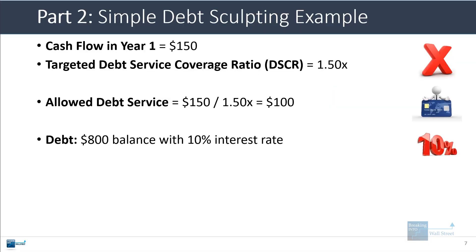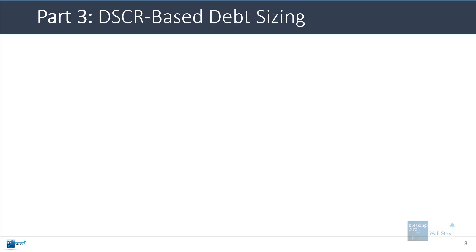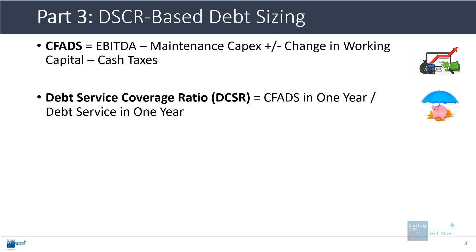I have a quick summary in PowerPoint if you want to see all the numbers laid out. Let's go into debt sizing, first looking at an example based on the debt service coverage ratio. The cash flow available for debt service in project finance models is usually defined as EBITDA minus maintenance CAPEX, plus or minus the change in working capital, minus cash taxes. The debt service coverage ratio is the cash flow available for debt service in one specific year divided by the debt service in that specific year.